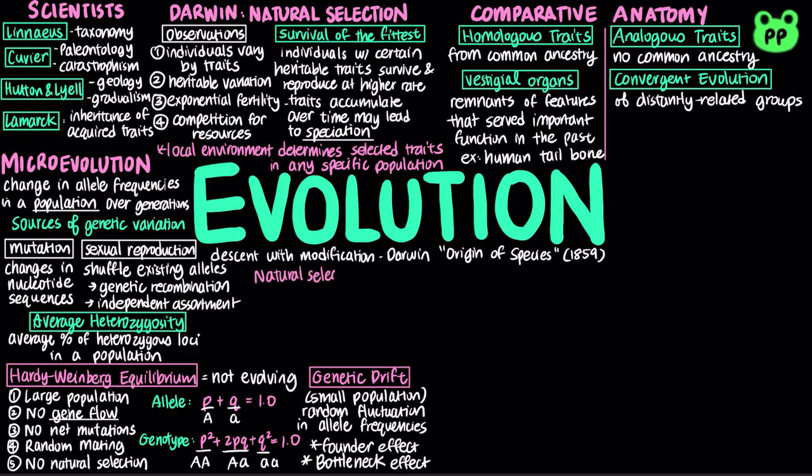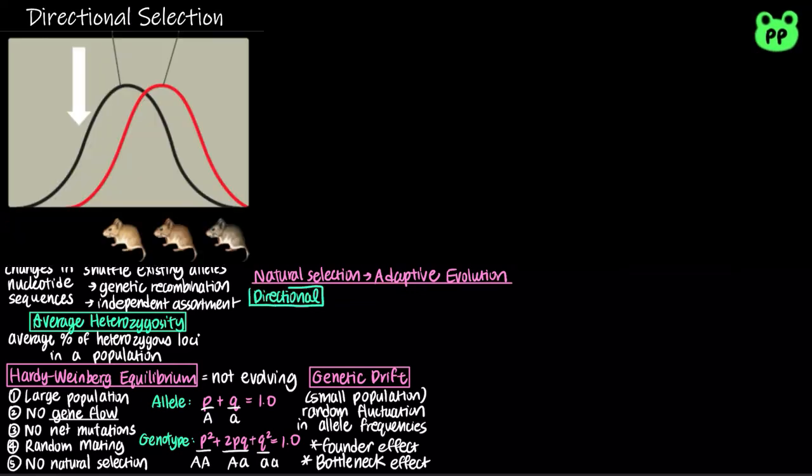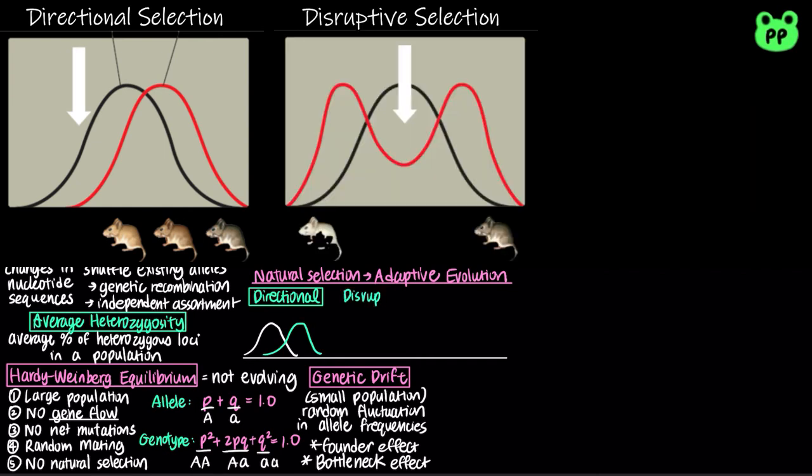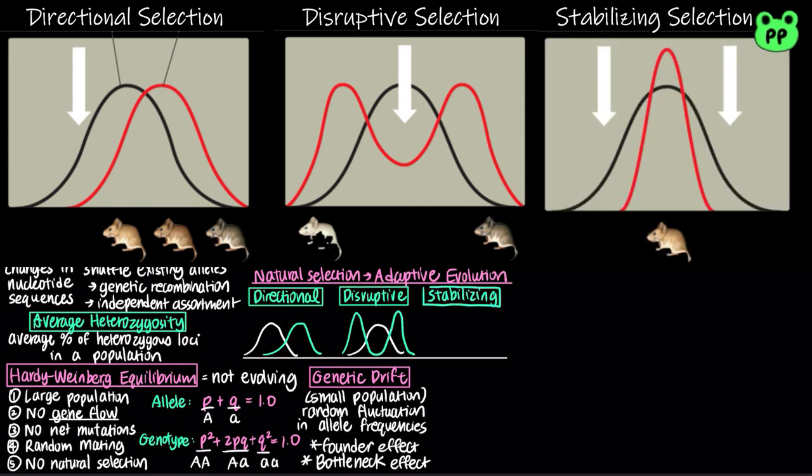Only natural selection consistently results in adaptive evolution, the match between an organism and its environment. There are three modes of natural selection. Directional selection favors individuals at one end of the phenotypic range. Disruptive selection favors individuals at both extremes of the phenotypic range. And stabilizing selection favors intermediate variants and acts against extreme phenotypes.